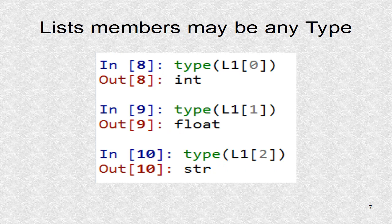The individual elements within a list may be any Python object. Here we have an integer, floating point number, and a string.